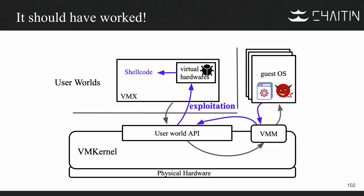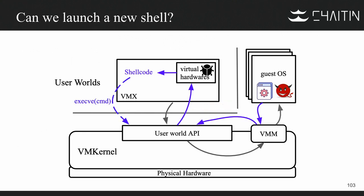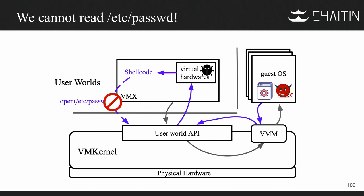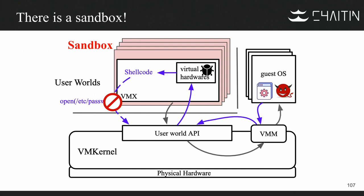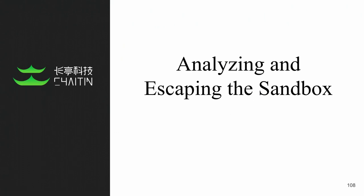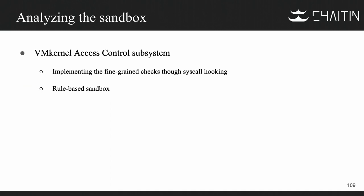We thought we had escaped from the virtual machine on ESXi successfully. We tried to execute some commands using system call iSave, but it failed. We tried to open and read some sensitive files like passwords — it failed again. Then we realized there is a sandbox — we cannot execute any commands unless we escape the sandbox as well. So the next part is how we analyze and escape the sandbox. After realizing there is a sandbox on ESXi, we reversed VMkernel code and found a kernel module named VMkernel Access Control System. This module implements fine-grained checks through system calls, and the sandbox appears to be rule-based.